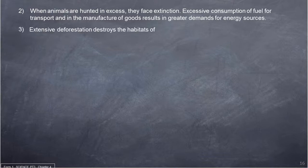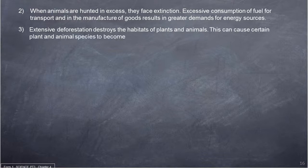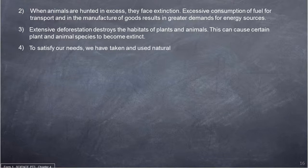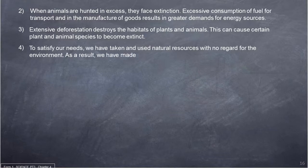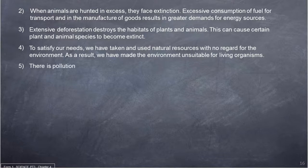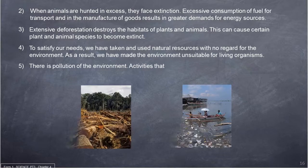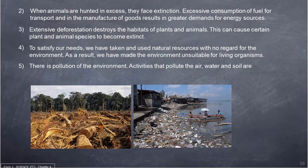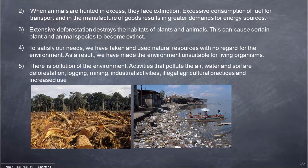Extensive deforestation destroys the habitats of plants and animals, which can cause certain plant and animal species to become extinct. To satisfy our needs, we have taken and used natural resources with no regard for the environment, making the environment unsuitable for living organisms. There is pollution of the environment through activities such as deforestation, logging, mining, industrial activities, illegal agricultural practices and increased use of vehicles and machinery.